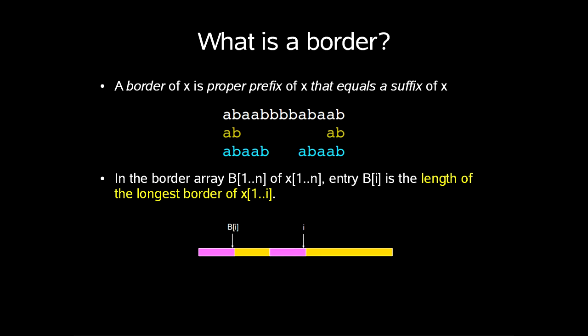If you remember what a border is, a border of a string x is any proper prefix of x that equals a suffix of x. We also discussed border arrays last time, where in the border array B[1..n] of x[1..n], entry i is the length of the longest border of x[1..i].